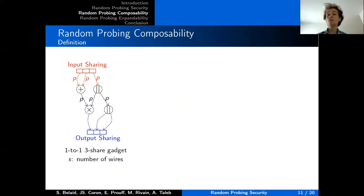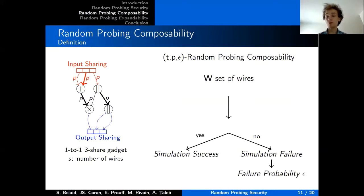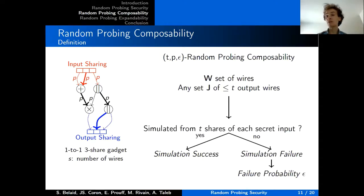The definition of random probing composability is a more developed definition of random probing security. We still consider a set W of leaking wires for the simulation success and failure, but in addition we also consider any set of t or less output wires. These two sets should be simulated from at most t-shares of each input. This additional constraint allows us to have an invariant in the composition notion, since for each gadget we can achieve a perfect simulation of the leaking wires plus t-shares of each output sharing from at most t-shares of each input sharing.